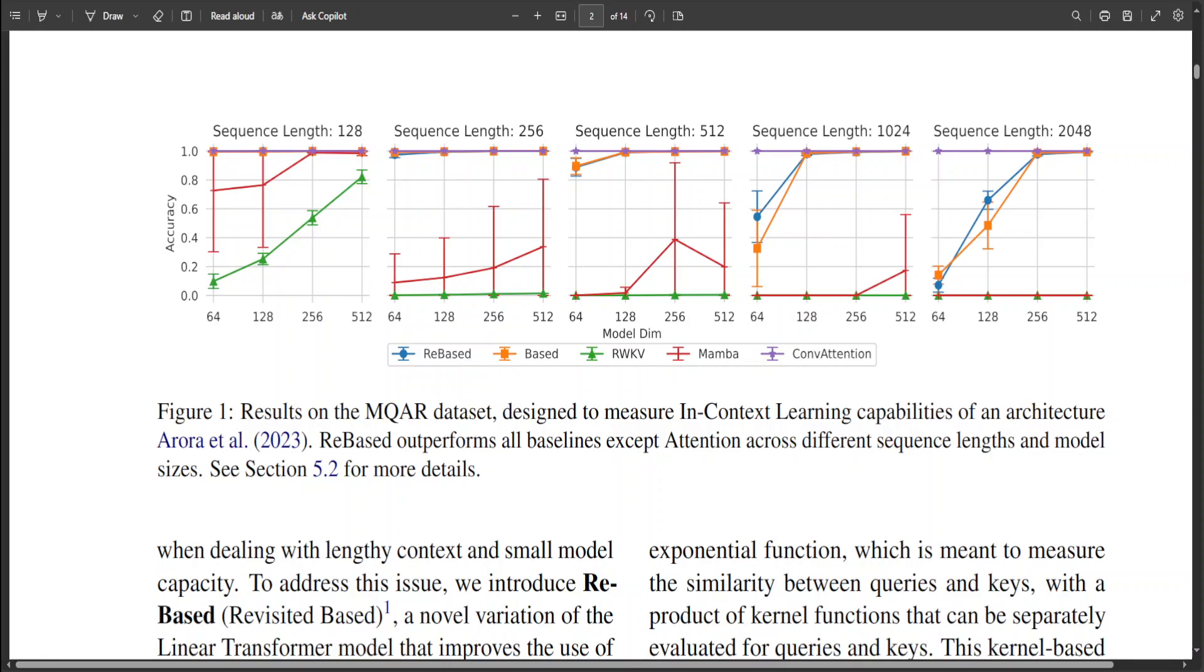Notably, while Based uses a Taylor expansion of an exponential function, the Rebased kernel function is different from the exponent but shows better performance.